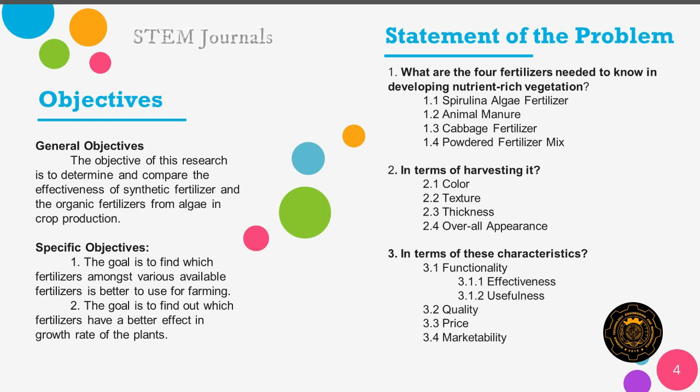The third question is: what is the evaluation of the spirulina algae in terms of its characteristics? The first characteristic is functionality, which is divided into two parts: effectiveness — we need to know if the spirulina algae fertilizer is an effective fertilizer — and usefulness, where researchers need to know if the fertilizer is useful or not. Next are quality and price, and lastly, marketability — to see if the fertilizer is marketable.